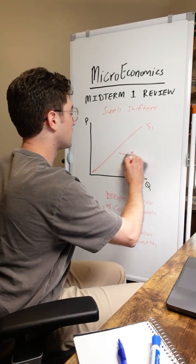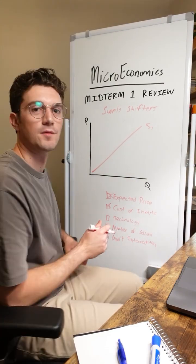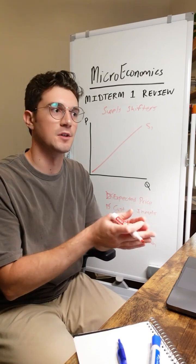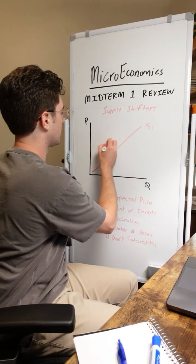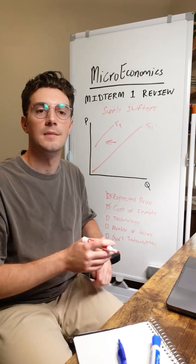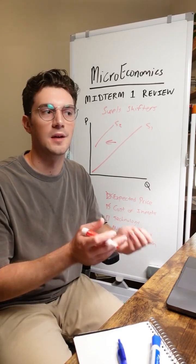Whereas on the flip side here, if technology worsens, like good example, this is like a natural disaster hits and now you don't have as much tech at your disposal, well supply is going to shift to the left. It's now more expensive for you to output as many units as before.